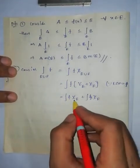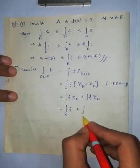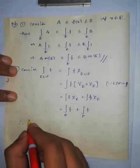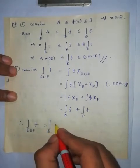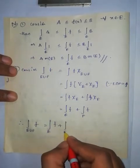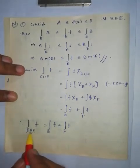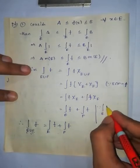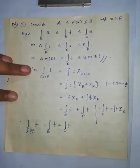Again from the definition of the Lebesgue integral over a set, this can be written as the Lebesgue integral over E of f plus the Lebesgue integral over F of f. Therefore, the Lebesgue integral over E union F of f equals the Lebesgue integral over E of f plus the Lebesgue integral over F of f — valid since E and F are pairwise disjoint. Note that the Lebesgue integral over E of f can be written as the Lebesgue integral of f·chi_E from the definition.